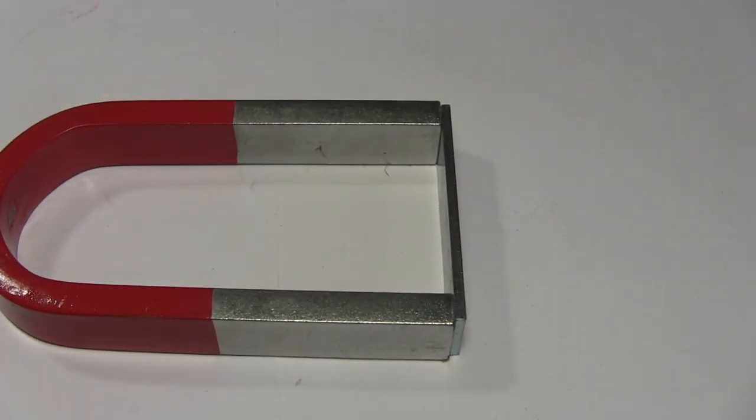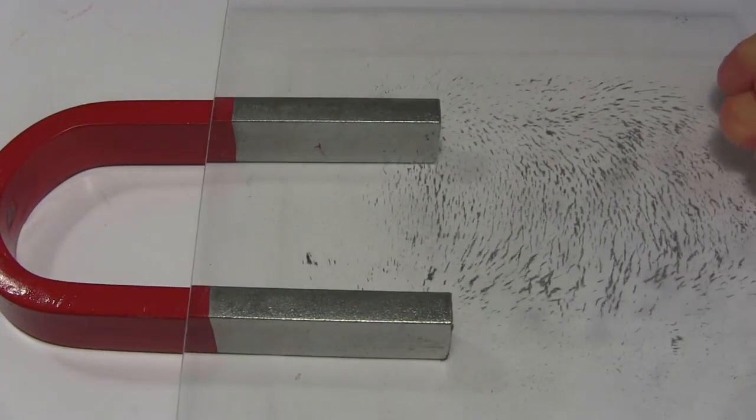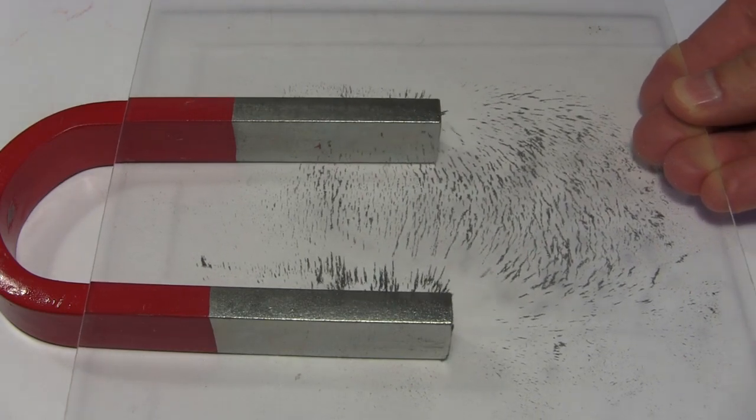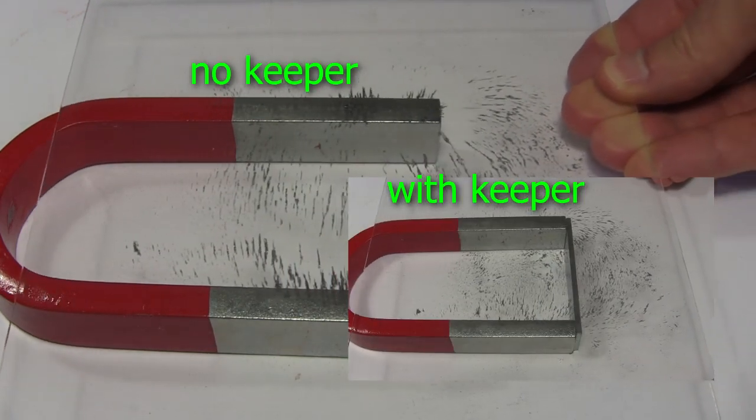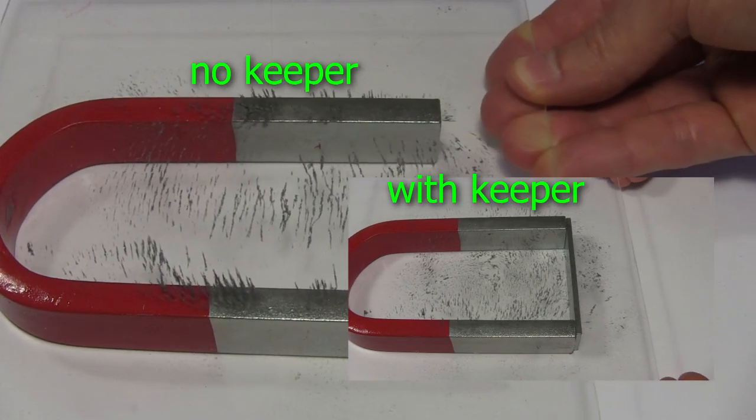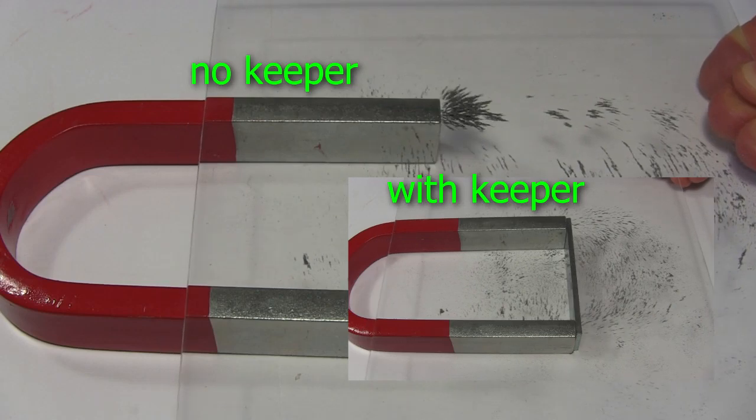Now for the really interesting part. What happens if we remove the keeper? What happens is that the magnetic field in the air near the ends of the legs is much, much stronger, and so it attracts the filings more strongly. Remember, the magnetic permeability of the steel keeper is higher than the magnetic permeability of the air. So with the keeper, most of the field was in the keeper, and not much of it was in the air.